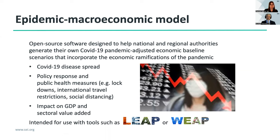The EPI Macro tool models COVID-19 disease spread as well as the policy response and public health measures. Such measures that can be modeled include lockdowns, international travel restrictions, social distancing, and others. It simulates the impact on GDP and sectoral value added. It's intended to be used with tools such as LEAP or WEEP and other planning tools that use GDP or sectoral value added as an input.